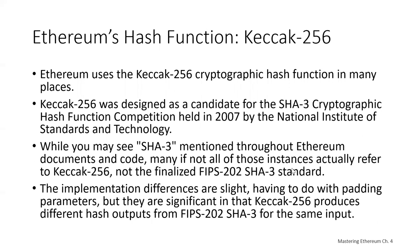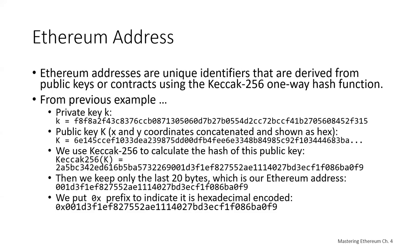Ethereum uses a different hashing algorithm than Bitcoin. Bitcoin uses SHA-256 and RIPEMD, while Ethereum uses Keccak-256. Keccak-256 was designed as a candidate for the SHA-3 cryptographic hash function — it is not, in fact, the SHA-3 standard, but it was designed for it. The implementation differences between SHA-3 and Keccak-256 are slight but significant in their different outputs.